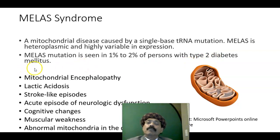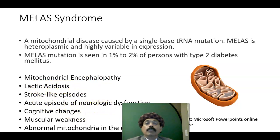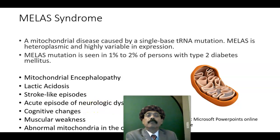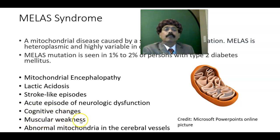What are the features of MELAS syndrome? The findings include mitochondrial encephalopathy, lactic acidosis, and acute episodes of neurologic dysfunction. There may also be cognitive changes and muscular weakness, because mitochondria is the powerhouse of the cell.